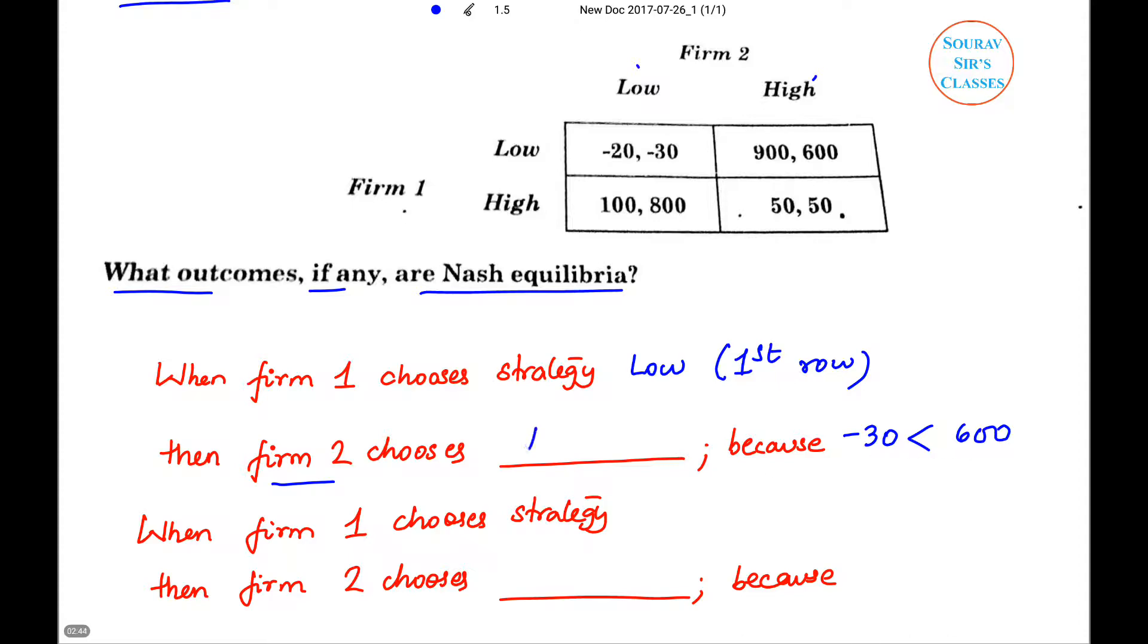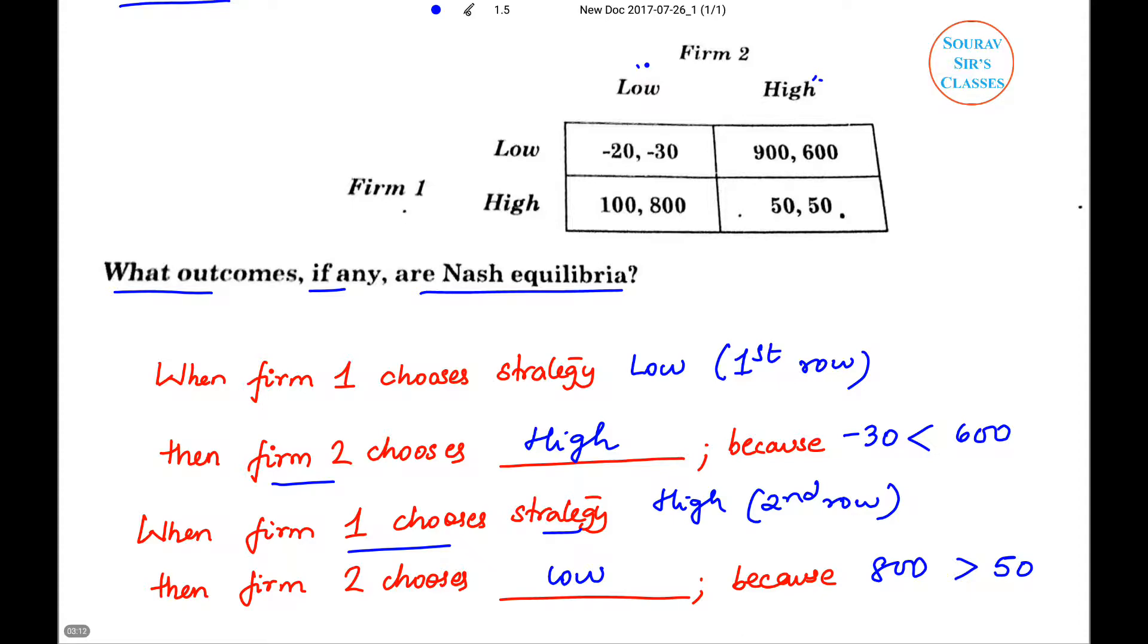When Firm 1 chooses strategy high, that means we are talking about the second row. Firm 2 has again two strategies: low and high. If he chooses low, he'll get 800. If he chooses high, he will get 50. Because 800 is greater than 50, he will end up choosing low.